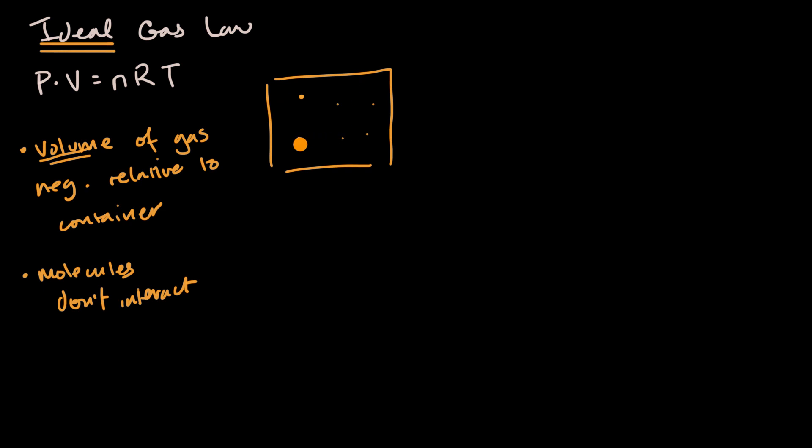And it's reasonable in many circumstances to assume that the molecules don't interact. Maybe they don't have strong intermolecular forces. Once again, because they're taking up a small portion of the volume, they might not get close to each other too often. And so that's why these are reasonable assumptions. And they allow us to say that PV is equal to nRT, which is a valuable approximation in most circumstances.